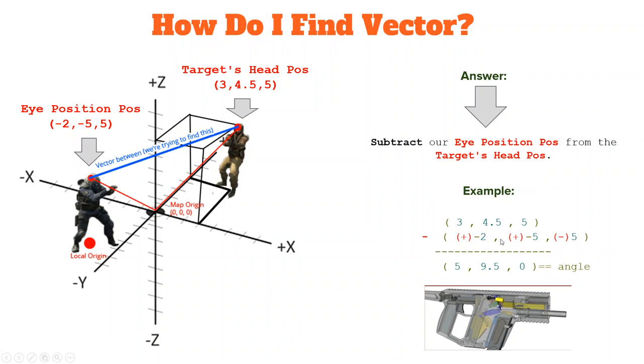We have a negative operator on the outside of the parentheses, so that means we take the inverse of the operator on the inside of the parentheses. So instead of -2, -5, and 5, it would be +2, +5, and -5, which will be 5, 9.5, and 0, which is our vector for angle.